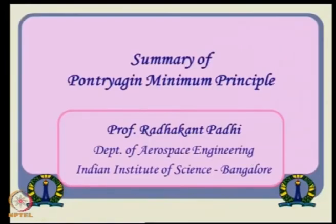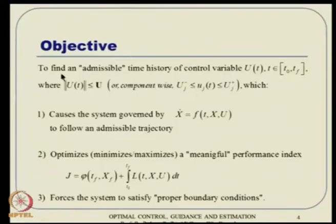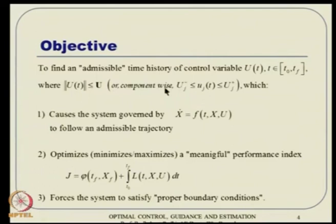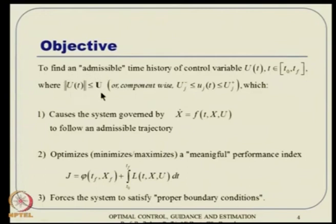Let us go through just one slide summarizing Pontryagin's minimum principle from the last class. The objective was to find an admissible time history of the control variable from T_0 to T_f such that all other objectives throughout the course are met, but the only condition is the control is constrained — either in a total norm sense or component-wise — between certain plus and minus values.